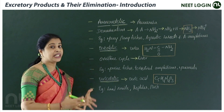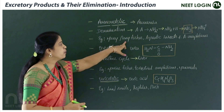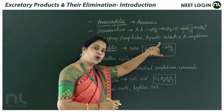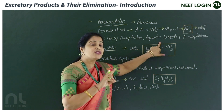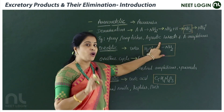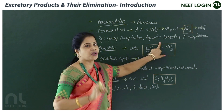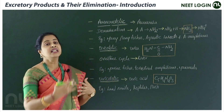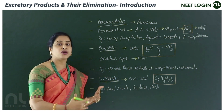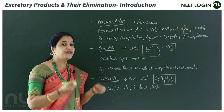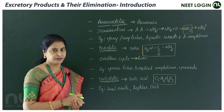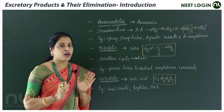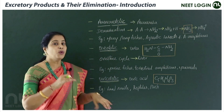Examples of ammonotelic animals include many bony fishes, aquatic insects — which are all freshwater forms — and aquatic amphibians. Even the larval form of the frog is ammonotelic, because its chief nitrogenous waste is ammonia.